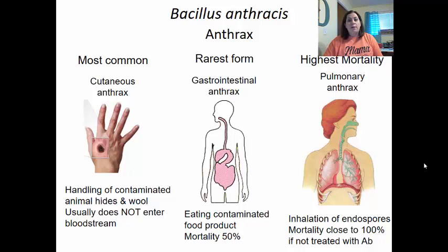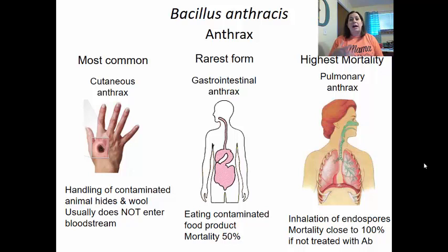The rarest form is gastrointestinal anthrax, due to eating contaminated food products — usually undercooked meat. The mortality rate is 50%, making it rare but dangerous. The highest mortality form is pulmonary anthrax, where the individual inhales the endospores. If untreated, the mortality rate is close to 100%. It needs to be treated with antibiotics quickly, but a lot of times it is not suspected, so the treatment window passes.